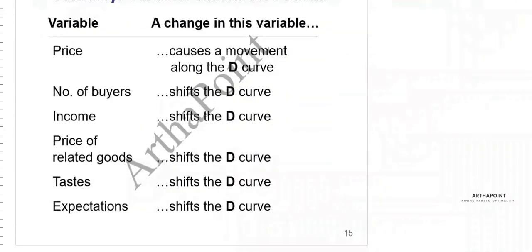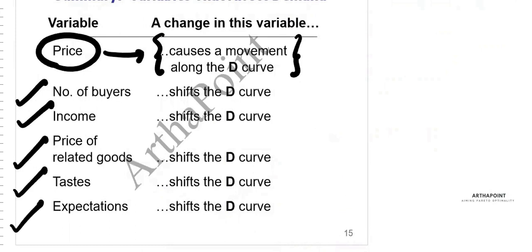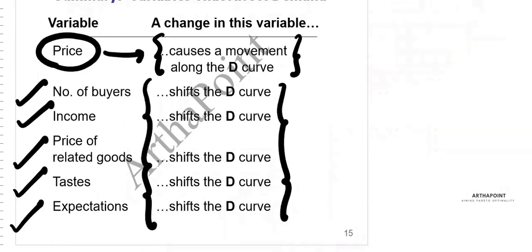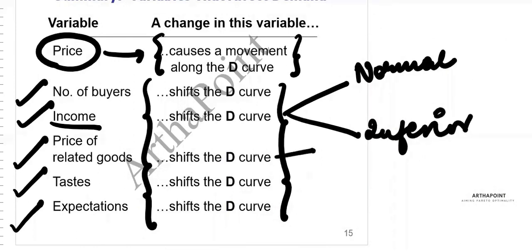To summarize: a change in price always leads to a movement along the demand curve, while number of buyers, income, price of relative goods, taste, and expectations all lead to a shift of the demand curve. Income depends on whether the good is a normal good or an inferior good, and the effect of a related good's price depends on whether it is a substitute or a complement.